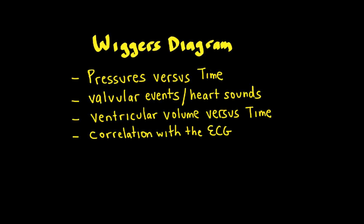After watching this video, you should be able to describe the key components of the Wiggers Diagram, which include looking at atrial, ventricular, and great artery pressures versus time, taking those concepts and figuring out what the semilunar and AV valves are doing — opening and closing — including heart sounds, and looking at ventricular volume changes versus time.